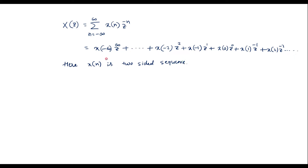We can observe that for negative values, if the signal is left-sided then the power of Z will be positive, and if the signal is right-sided then the power of Z will be negative.